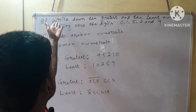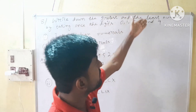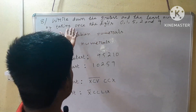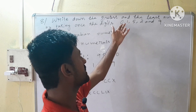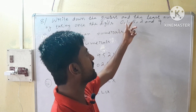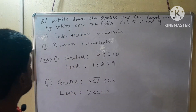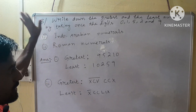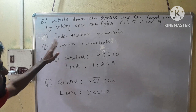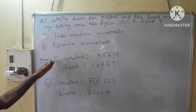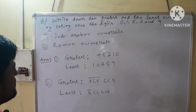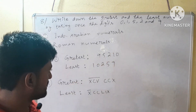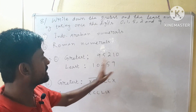Our next question is question number 8: write down the greatest and the least number by taking the digits only once — not more than one time. The digits are 0, 1, 5, 2, and 9. For Indo-Arabian numerals, the greatest number will be 95,210 and the least number will be 10,259.